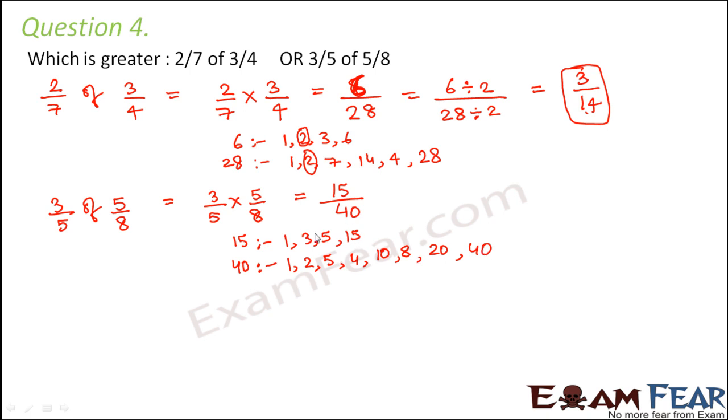So which is the highest common factor? It is 5. So therefore we will divide the numerator and the denominator by 5. This would be 3, and 40 divided by 5 would be 8.